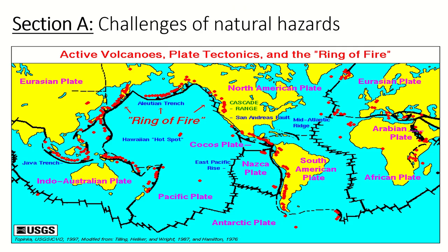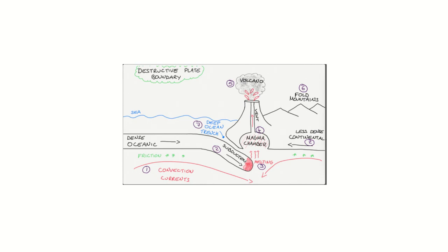So let's get cracking. The first section of the Paper 1 exam, Section A, is the Challenges of Natural Hazards. During this topic you'll be asked all about earthquakes, volcanoes, tropical storms and climate change. If you are asked about the distribution of tectonic hazards, it generally follows the plate boundary pattern. Along these black lines on the map you can see the little red dots where our volcanoes are forming. However, there are some anomalies — for example, the Hawaiian hotspot — which is caused by something different to our traditional four plate margins. If anything is not occurring on a plate margin, it's likely going to be due to a hotspot. They could also ask you for the distribution of tropical storms — and as long as you remember that tropical storms form in ocean water of 27 degrees or more, you should remember they form in tropical equatorial regions.